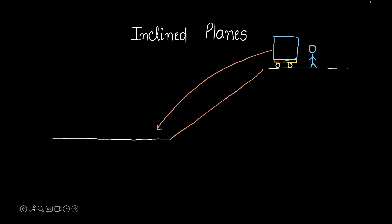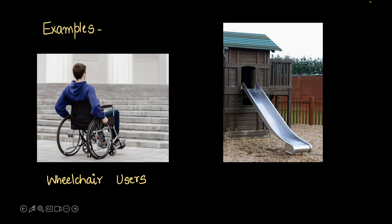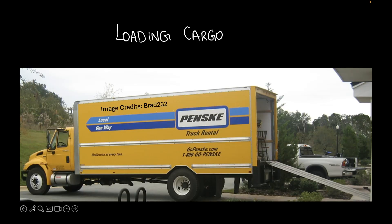Let me give you a few examples where you've seen inclined planes. Look at this picture — this person is in a wheelchair and is stuck because there are only stairs in front of them. If there was a ramp there, life would have been much easier. That slide in your playground is also just an inclined plane. Inclined planes can also be used to load cargo — look at this truck, there's a ramp and you can slide things up easily.